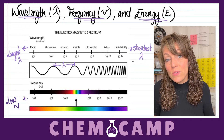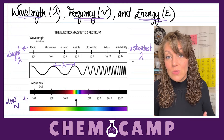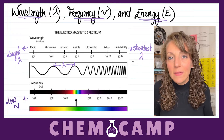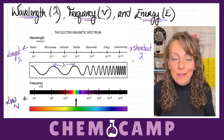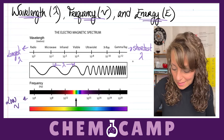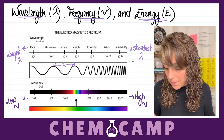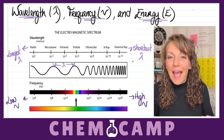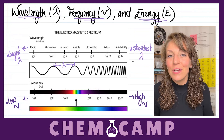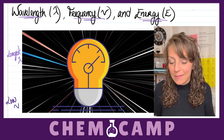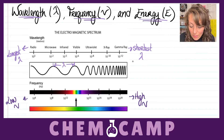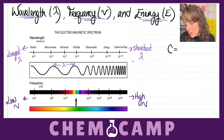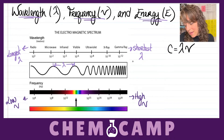Vice versa, at the other end, those gamma rays that have a real short wavelength are associated with a real high frequency. Not only that, but wavelength and frequency are actually related to each other through the speed of light. So there's a very important equation where you have the speed of light c equals your lambda times nu — frequency times wavelength.